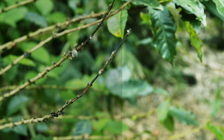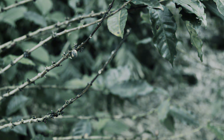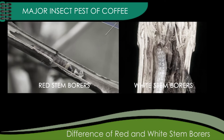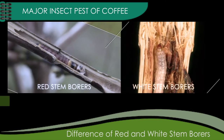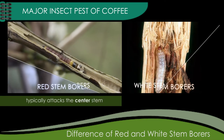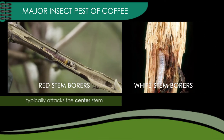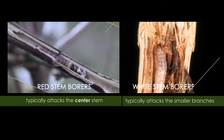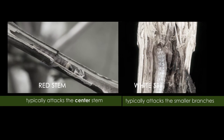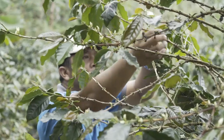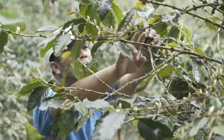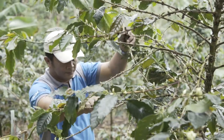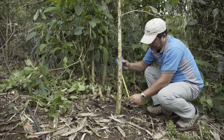The interrupted sap flow results in the plant becoming severely wilted and its eventual death. The red stem borer typically attacks the center stem, while the white stem borer typically attacks the smaller branches rather than the center stem, which makes it appear less destructive, but it requires the same pest management and control methods.